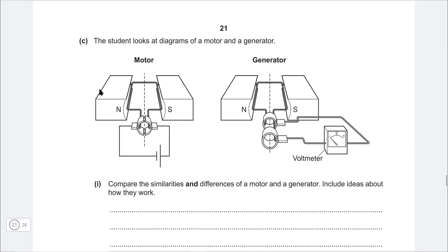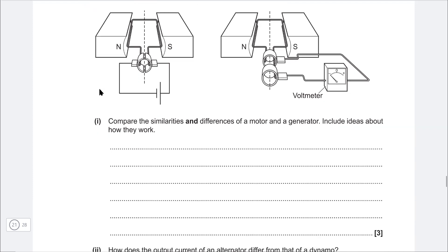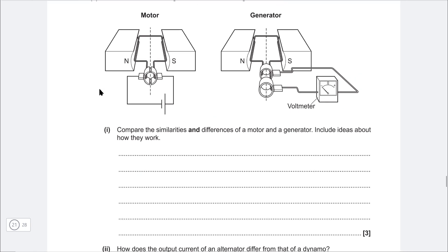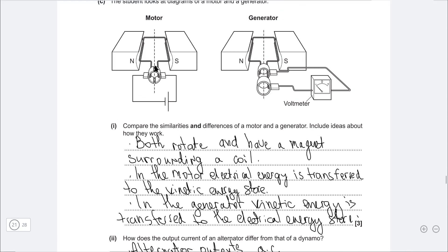Next one about motors and generators. We have a motor and a generator. Compare the similarities and differences of a motor and a generator. Include ideas about how they work. So here's my answer. First of all, they both involve rotation. We have a coil which is rotating in both cases, and that coil is being surrounded by some magnets. Now in the motor, electrical energy is transferred to the kinetic energy store. In the generator, kinetic energy is transferred to the electrical energy store.